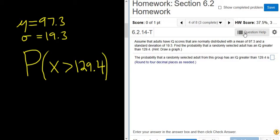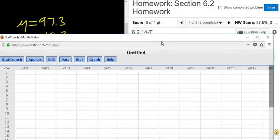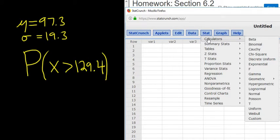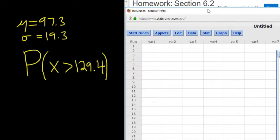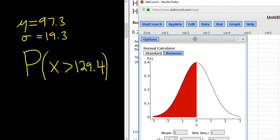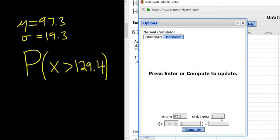Let's just do it. So you go to StatCrunch and we just go to Normal. We go to the Normal Calculator, so Stat Calculators, and then you go to Normal, and then we just enter all the numbers. So the mean here is 97.3, the standard deviation is 19.3.